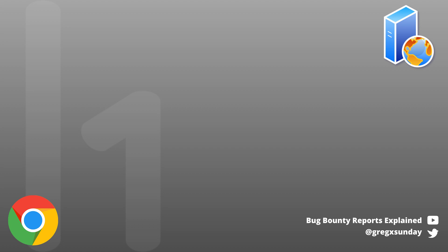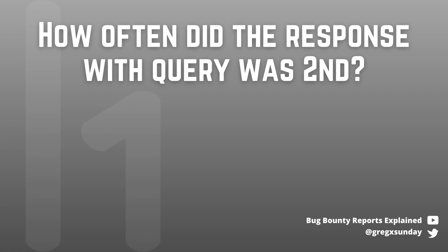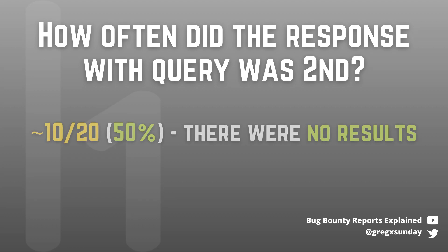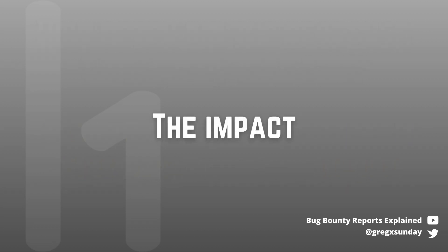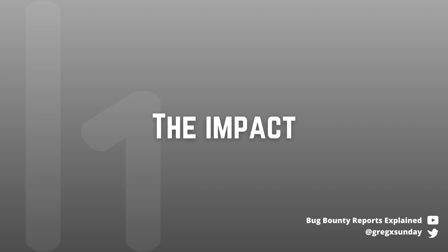Then you repeat the operation 20 times and look at how often the response with the query came back second. If it was second in about half of the requests, your query did not return any reports. If it was second in about 16 out of 20 requests, that means the string you are looking for is present in at least one of the victim's reports. You can then move on to the next character or the next word. This way it was possible to exfiltrate parts of private reports from HackerOne.